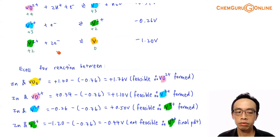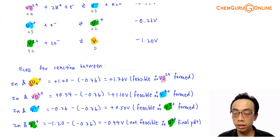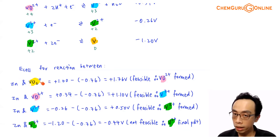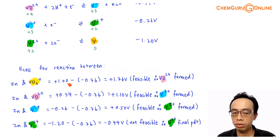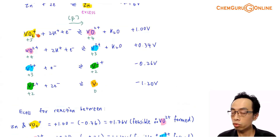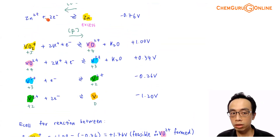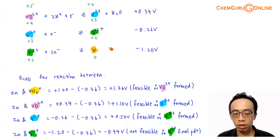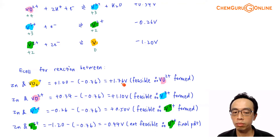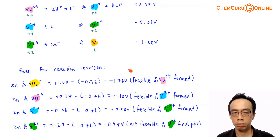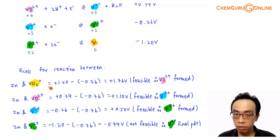We consider the reduction of the vanadium species and the oxidation of zinc, then calculate the E-cell. For zinc reacting with VO2+(+5): E-cell = +1.00 V (reduction of VO2+) − (−0.76 V) (oxidation of zinc) = +1.76 V. This is positive, so the reaction is feasible — it is possible for zinc to reduce VO2+(+5) to VO2+(+4).